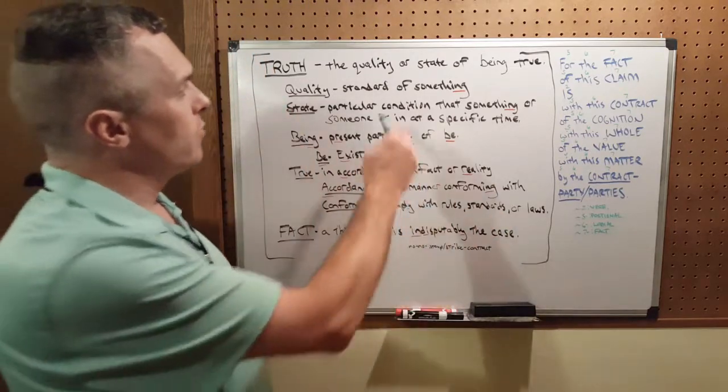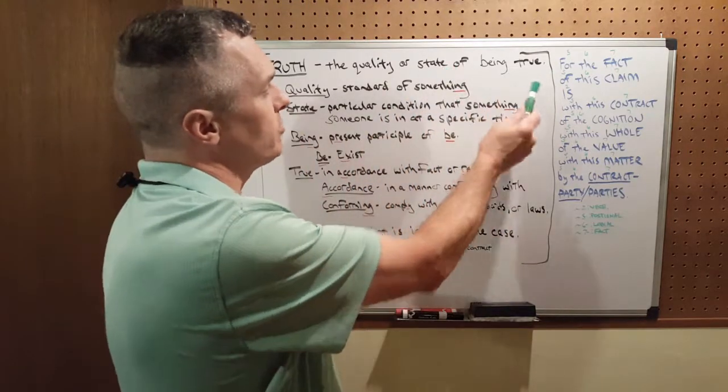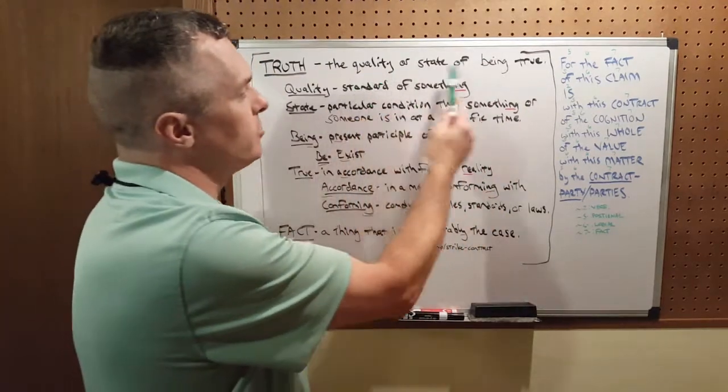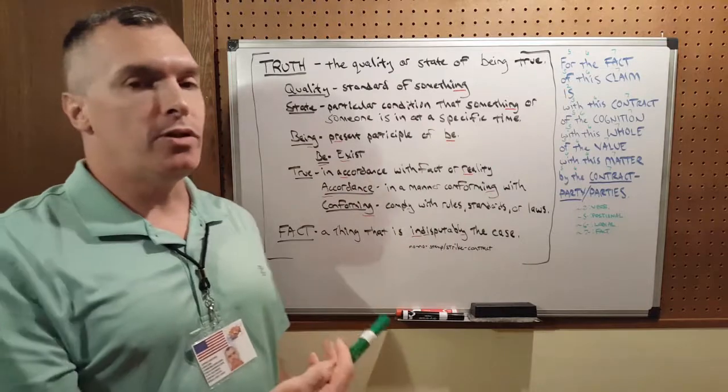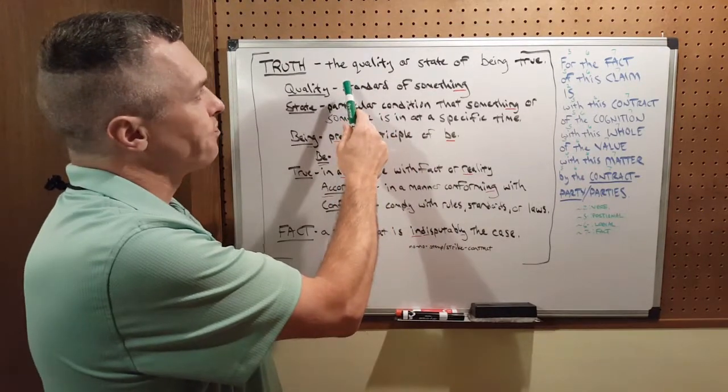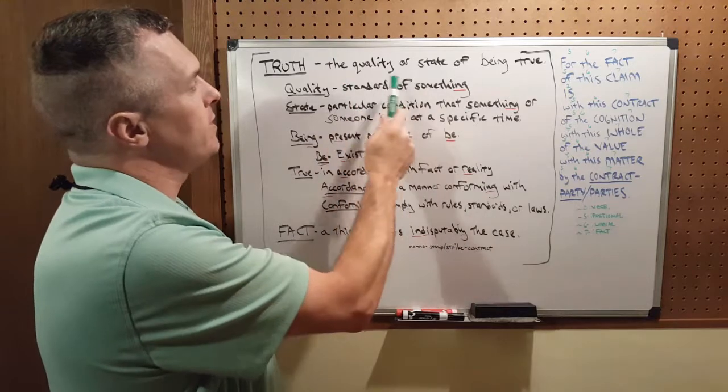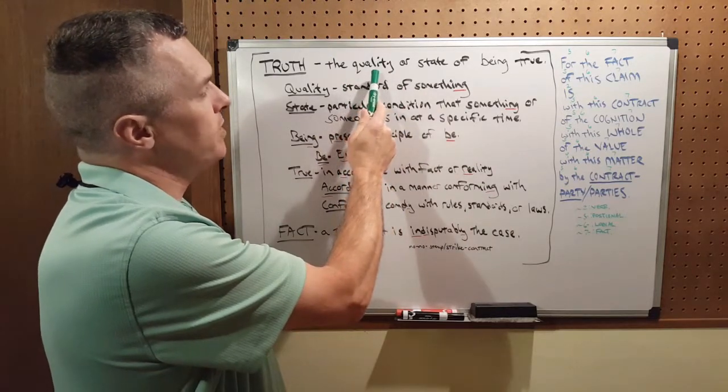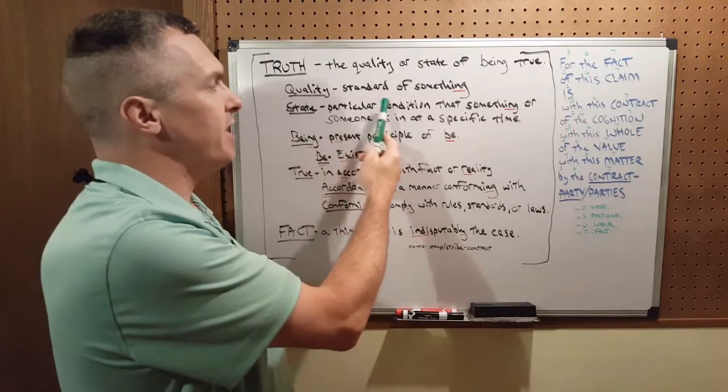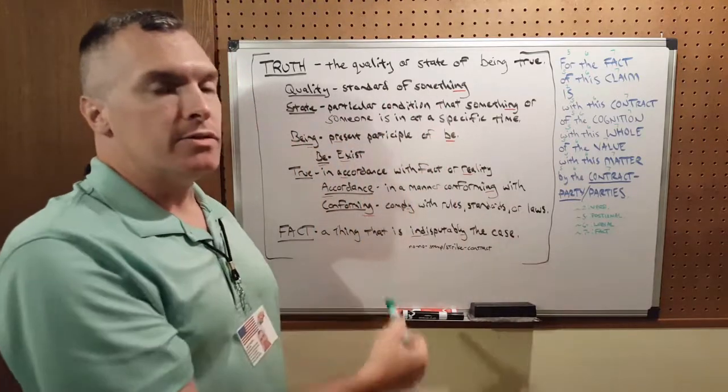Google tells me that truth is the quality or state of being true. Now I can assume a lot about that definition, but if I really want to know, what I would do is I would look up the key words in the phrase. The first would be quality. So I look up quality and Google tells me that quality is the standard of something.